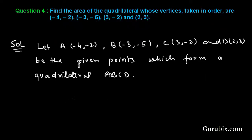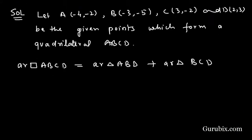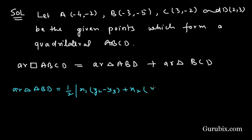We can find the area of quadrilateral ABCD by finding the area of triangle ABD and the area of triangle BCD. We use the formula: area = (1/2) |x1(y2 − y3) + x2(y3 − y1) + x3(y1 − y2)|.